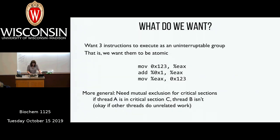We would only get correct results if those three instructions all executed atomically — without any interruptions or switching to another thread. So we need to provide atomicity, or mutual exclusion, which means when this code runs it excludes the same code running on another thread. If we have this critical section of code, mutual exclusion means only one thread can be executing in that critical section at a time.